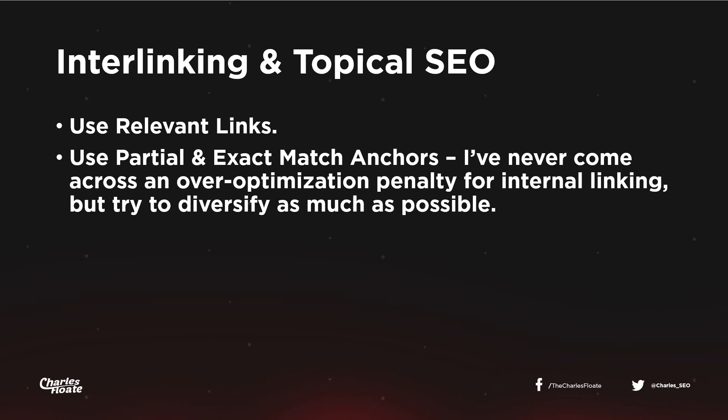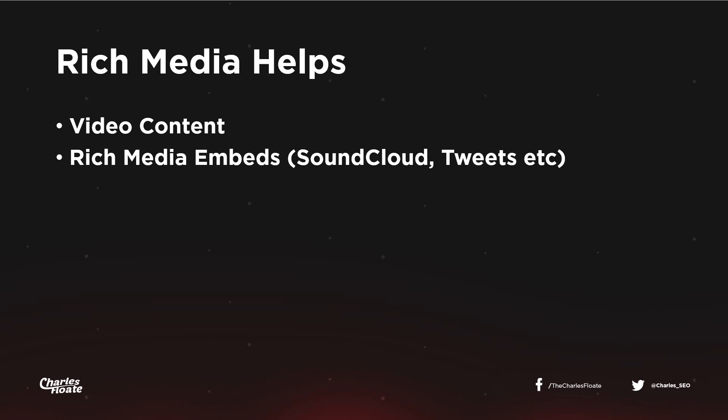When it comes to interlinking, use only relevant links and use partial and exact match anchors — but diversify them as much as possible, using different partial exact anchors each time you link to a page. This builds ranking power across more keywords rather than hammering the same exact-match anchor, which can lead to over-optimization. We had a client with the same anchor used 237 times across their site; after manually changing those anchors, we saw massive ranking increases for that page.